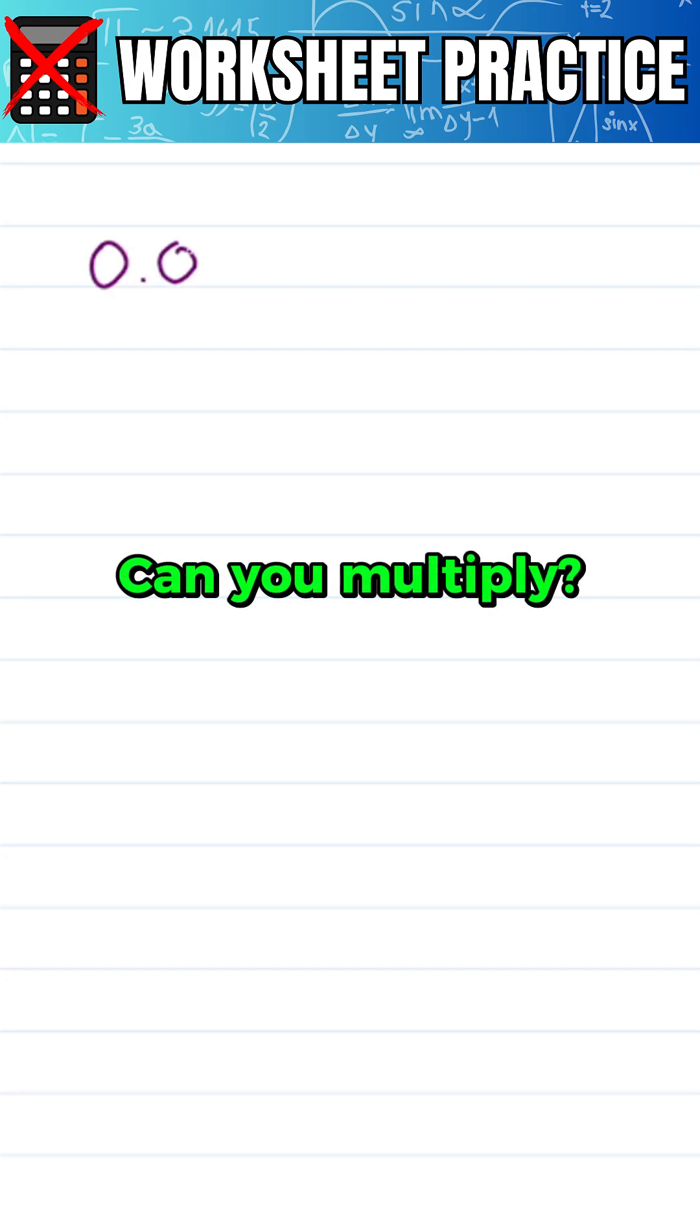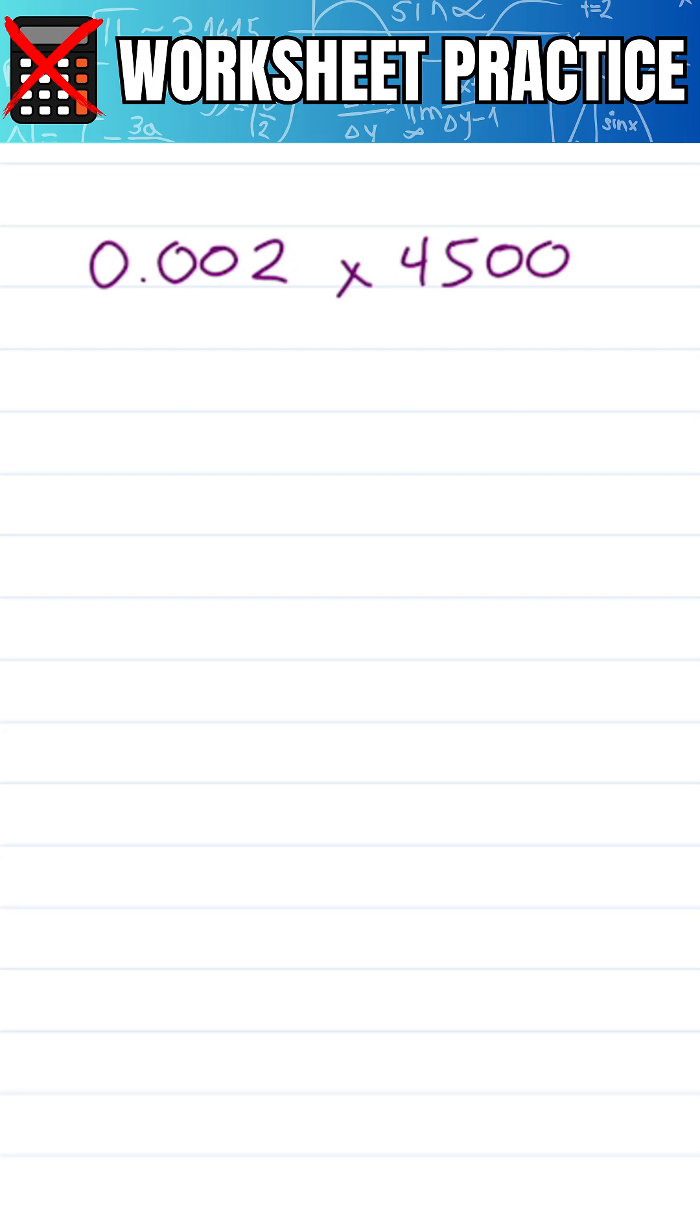Can you multiply 0.002 times 4500 in your head? You don't even have to round if you use the decimal trick.